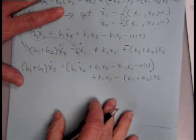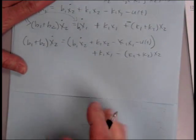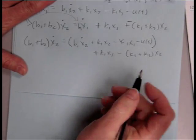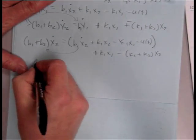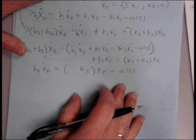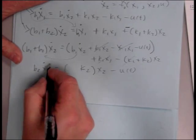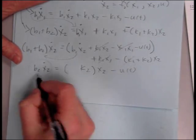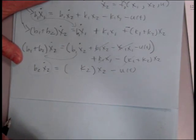And then we'll just take what we got for b1 x1 and substitute in there. It's going to be a little messy. And so we'll bring this over to the other side, we'll get b2 x2 dot equals. And so now we can substitute into our first equation.